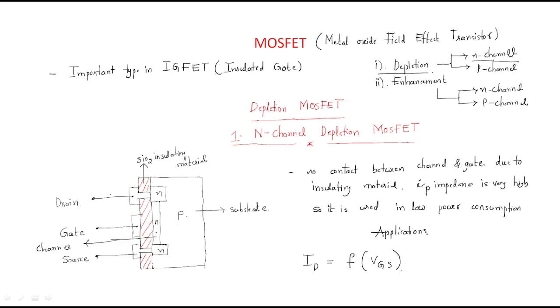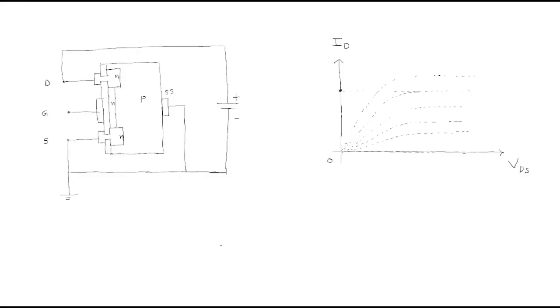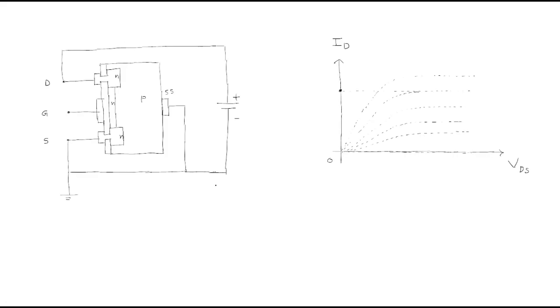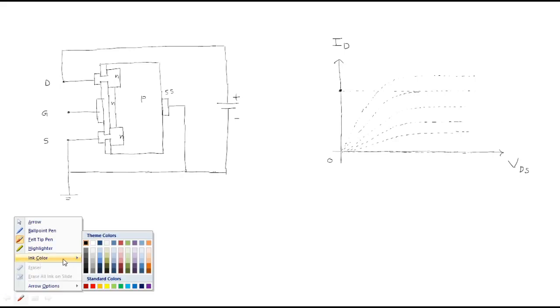The voltage between gate and source is taken as the input, and the current flowing through the drain is the output. So the output drain current is a function of the input voltage. By changing this input voltage we analyze how the drain current varies. As the first case, we consider gate-to-source voltage VGS equal to zero.